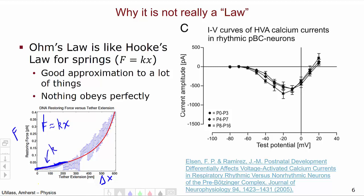Ohm's law follows a similar idea. Almost nothing obeys Ohm's law exactly. So over here on the right we have the IV curves of calcium currents in neurons. And we can see that it's not at all linear. It's got this complex sort of shape.